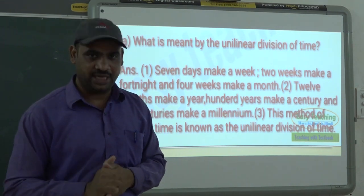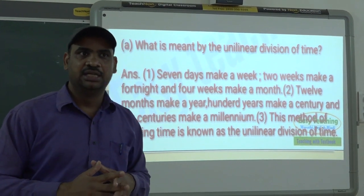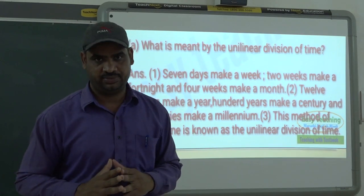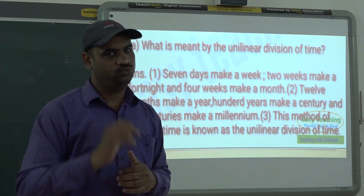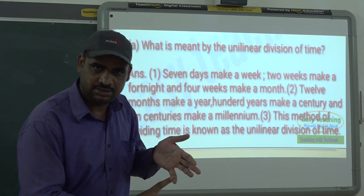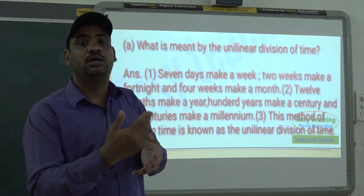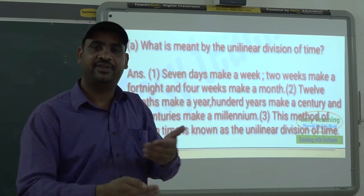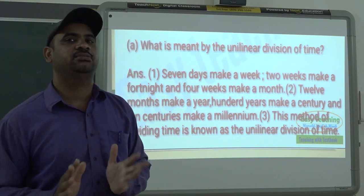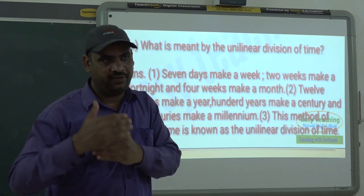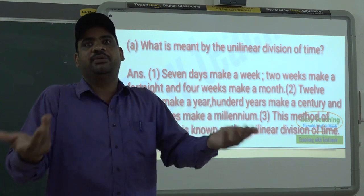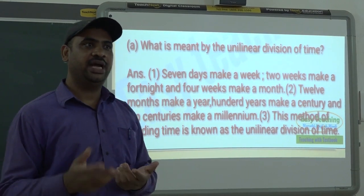Seven days make one week. After a week, there is a fortnight — the period of two weeks, or 14 to 15 days, is called a fortnight. In a month there are two fortnights. One month may be 28, 29, 30, or 31 days. After months, 12 months make one year.